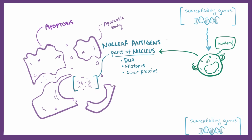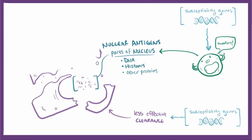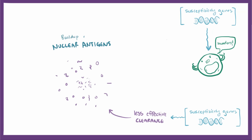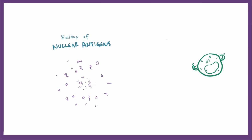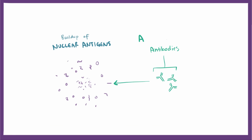Susceptibility genes also cause less effective clearance of apoptotic bodies, meaning more nuclear antigens end up floating around. B cells may encounter these and begin producing antibodies against the nuclear material — called anti-nuclear antibodies — which are present in almost all cases of lupus.